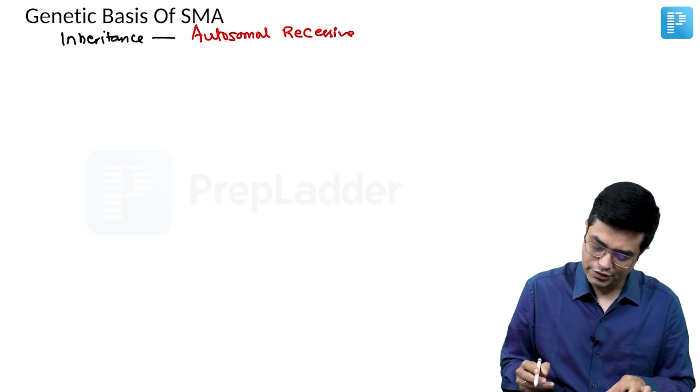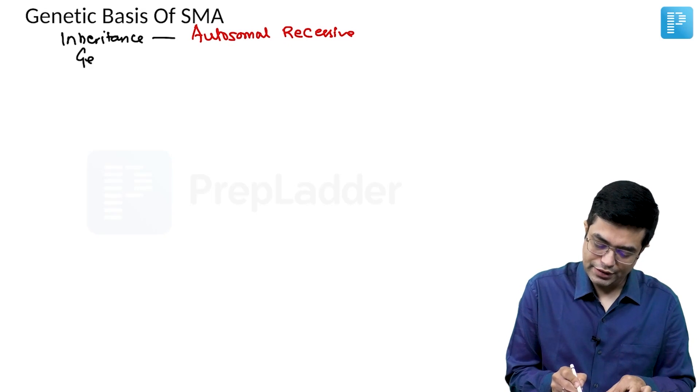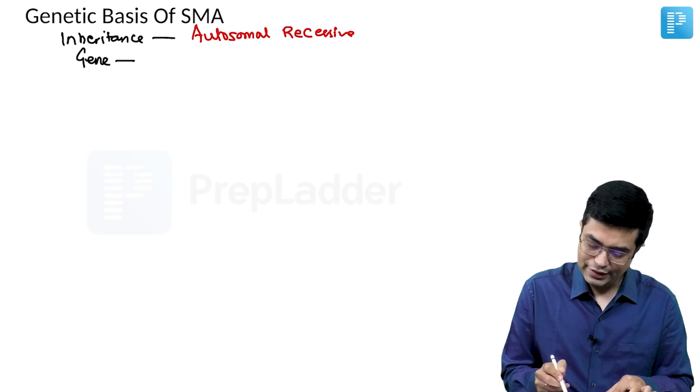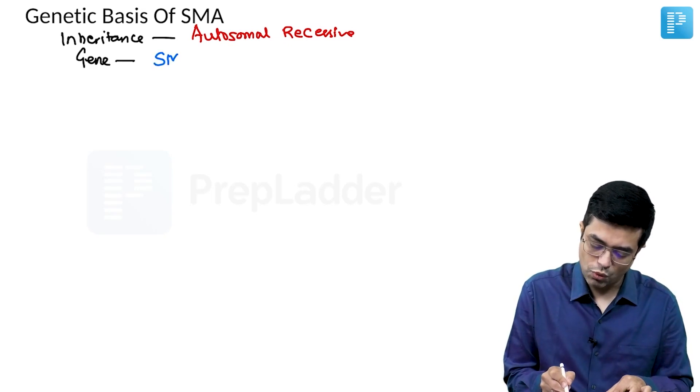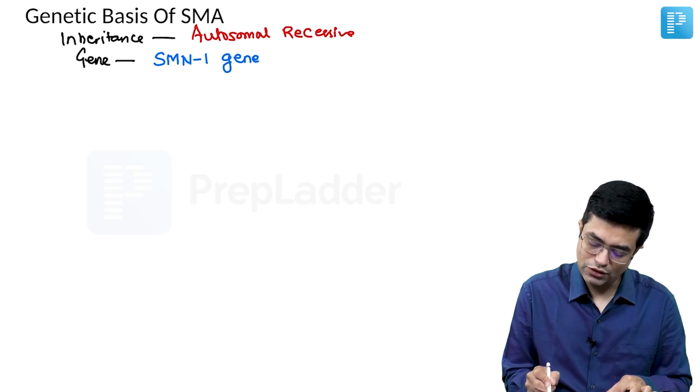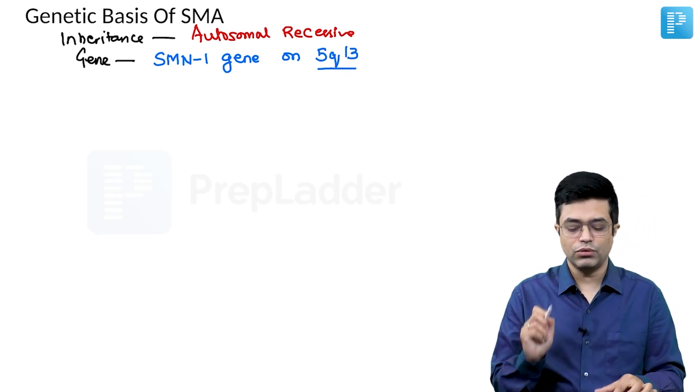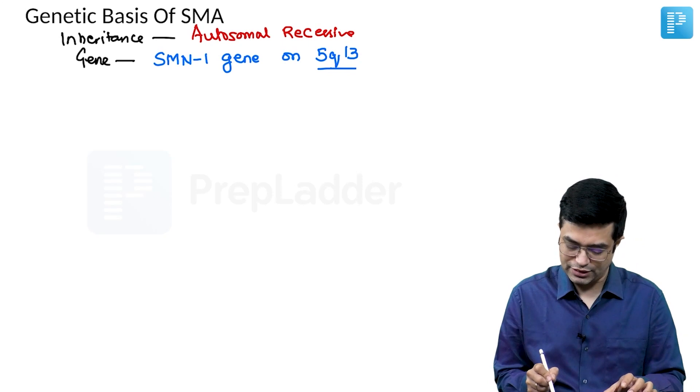The gene involved in SMA is called SMN1 gene, which is present on chromosome 5q13. This is the location where the SMN gene is present.